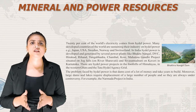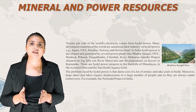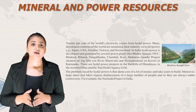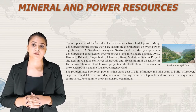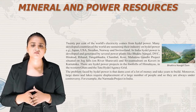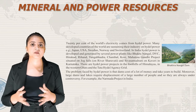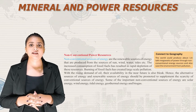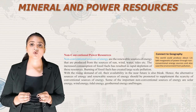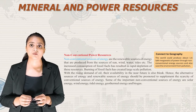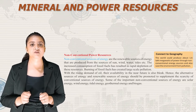The problem with hydropower is that dams cost a lot of money and take years to build. Moreover, large dams and lakes require displacement of a large number of people and are always under controversy — for example, the Narmada project in India. The world could produce about 1.6 lakh megawatts of power through non-conventional energy sources and also save the environment from pollution.